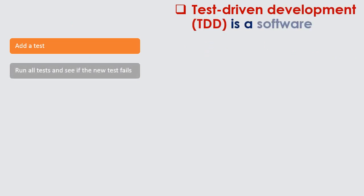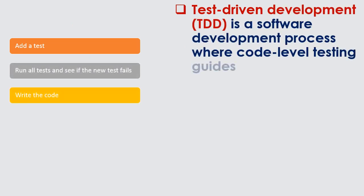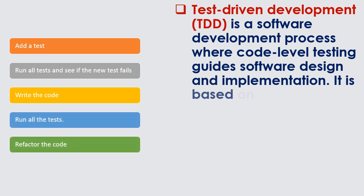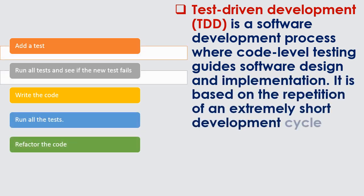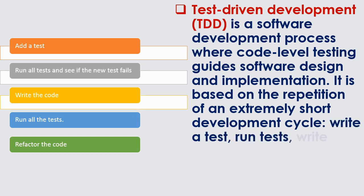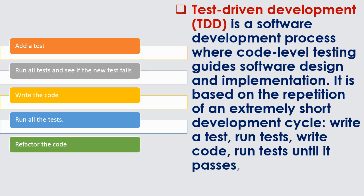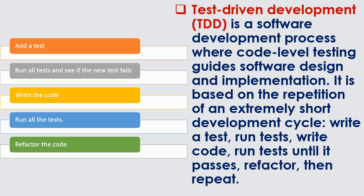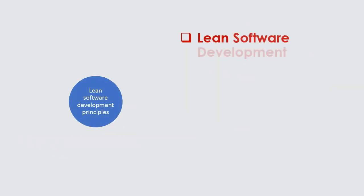Test Driven Development, TDD, is a software development process where code-level testing guides software design and implementation. It is based on the repetition of an extremely short development cycle: write a test, run tests, write code, run tests until it passes, refactor, then repeat.